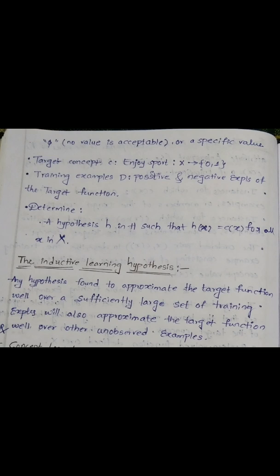The inductive learning hypothesis: any hypothesis found to approximate the target function well over a sufficiently large set of training examples will also approximate the target function well over other unobserved examples.